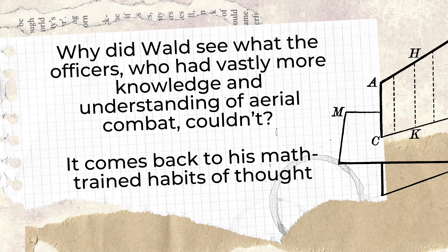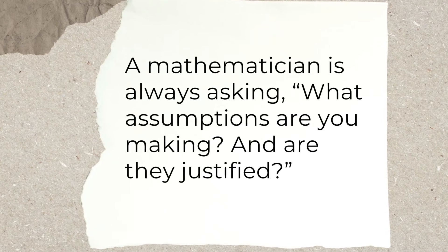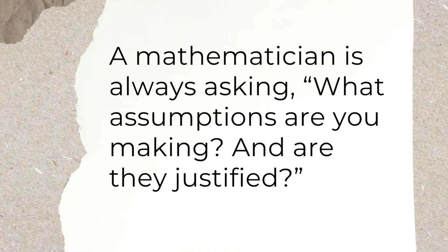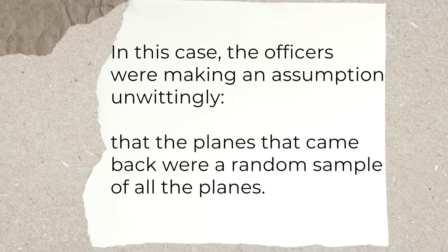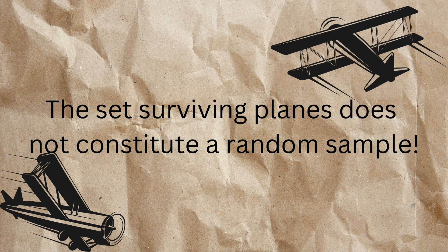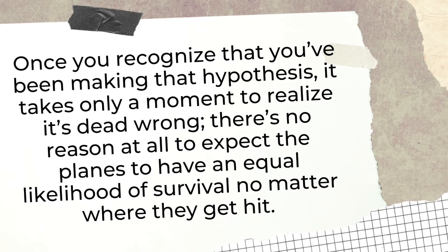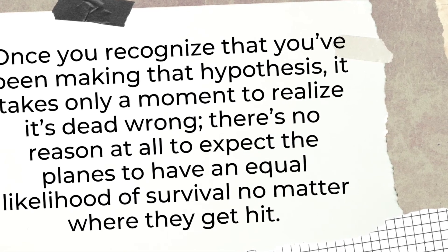So why did Wald see what the officers, who had vastly more knowledge and understanding of aerial combat, couldn't? It comes back to his math-trained habits of thought. A mathematician is always asking: what assumptions are you making, and are they justified? This can be annoying, but it can also be very productive. In this case, the officers were making an assumption unwittingly — that the planes that came back were a random sample of all the planes. If that were true, you could draw conclusions about the distribution of bullet holes on all planes by examining only the surviving ones. Once you recognize that you've been making that hypothesis, it takes only a moment to realize it's dead wrong. There's no reason to expect that all planes have an equal likelihood of survival no matter where they get hit.